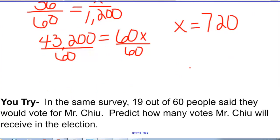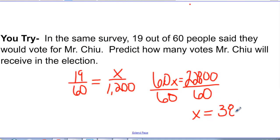So here's one for you to try. So again, I set up a proportion and I found that we would predict that about 380 people would vote for Mr. Chiu.